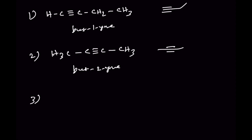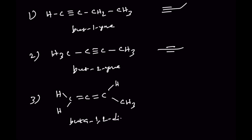Number three: we can write buta-1,2-diene. In condensed form and bond line notation it looks like this. This is buta-1,2-diene. For alka-dienes we keep the 'a' — we do not drop it even though two vowels come successively.